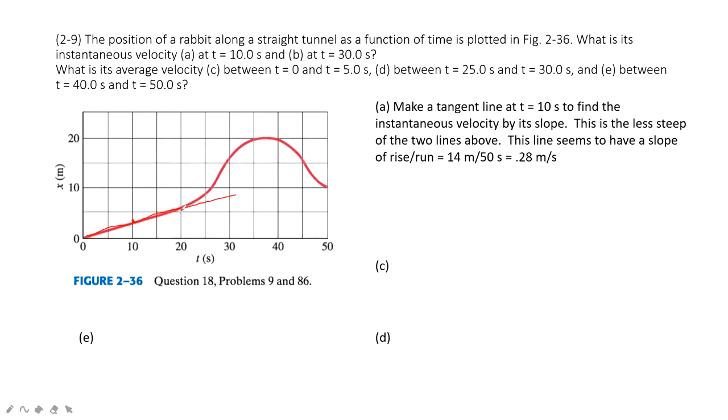Then we can find the instantaneous velocity at t equal to 10. We can see in 50 seconds, it is around 14 meters in this 15 seconds. So this tangent line uses this length divided by this one, which is around 1.4 meters per second or 0.28 meter per second.